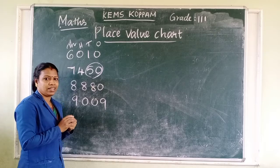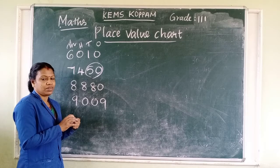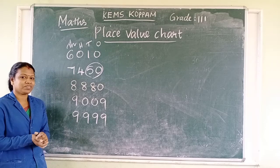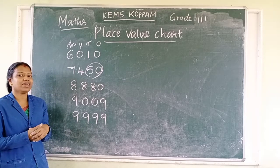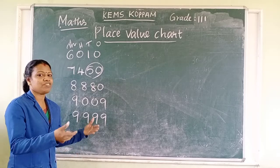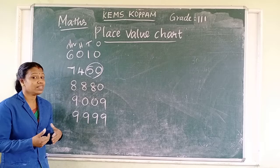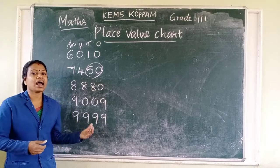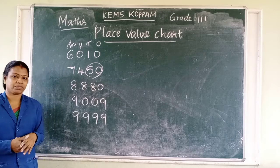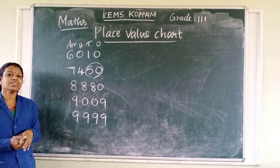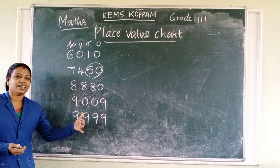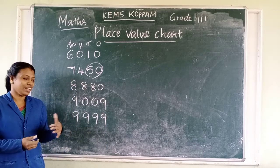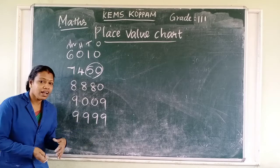Now, are you all clear on how to write the number names? What's the number? Can you read this number? This is the biggest four digit number — nine, nine, nine, nine. All are nines. It is the biggest four digit number. Read this number. Nine thousand, nine hundred and ninety-nine. Yes — nine thousand nine hundred and ninety-nine.